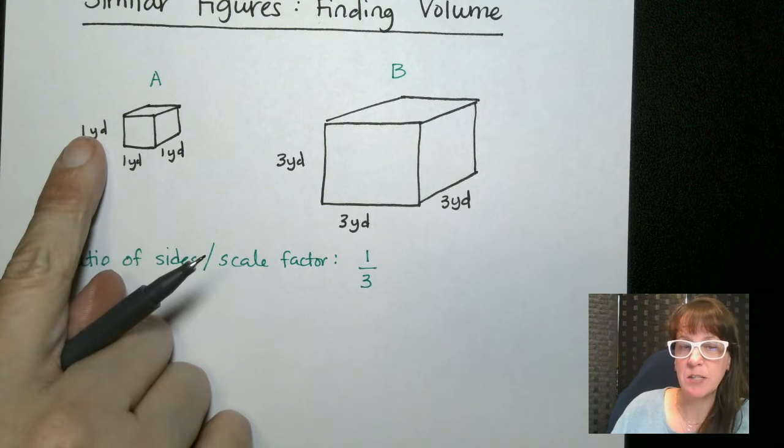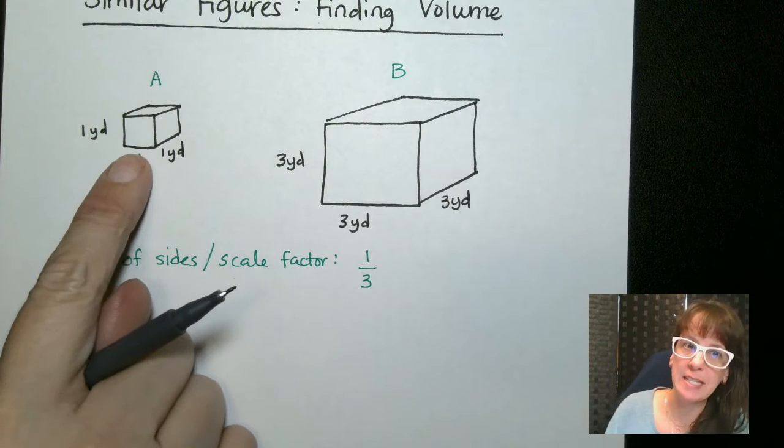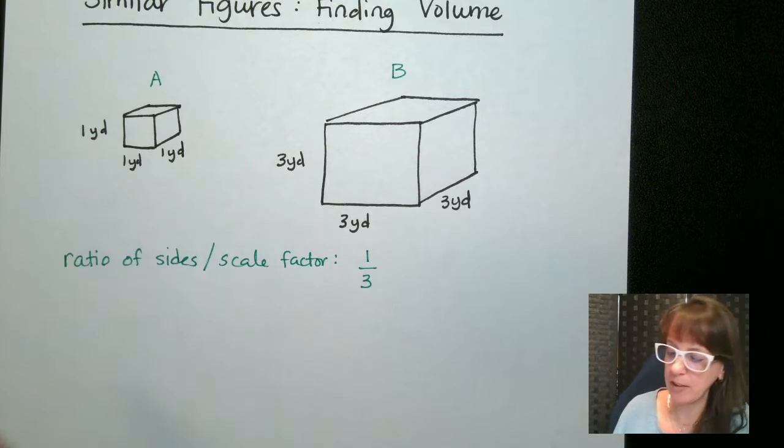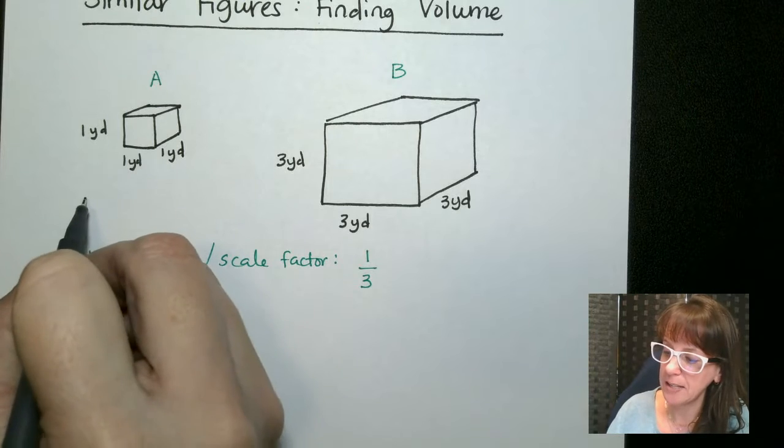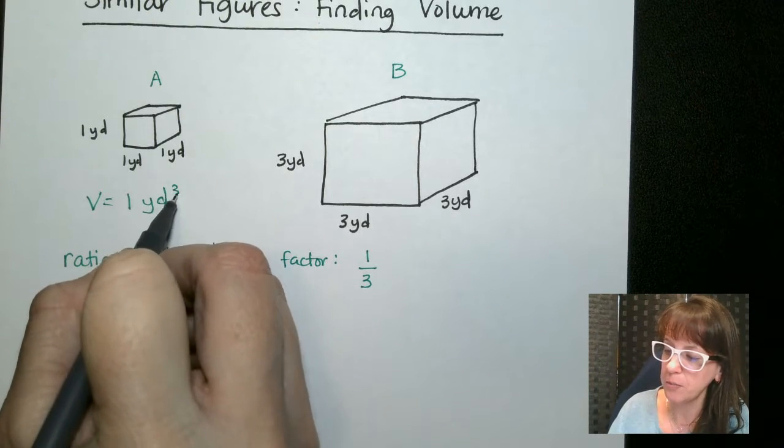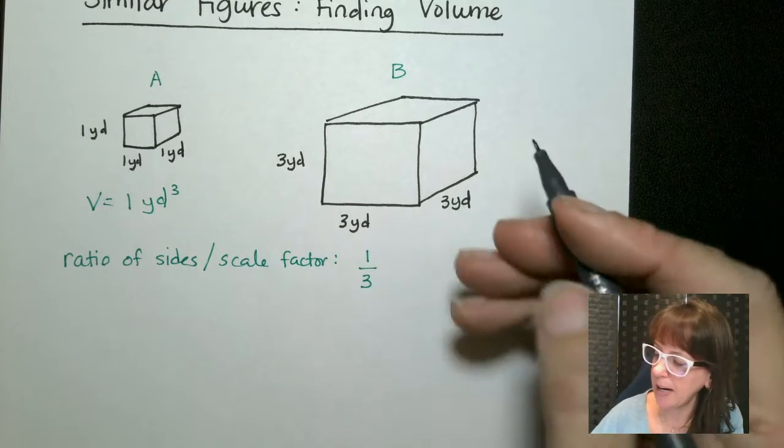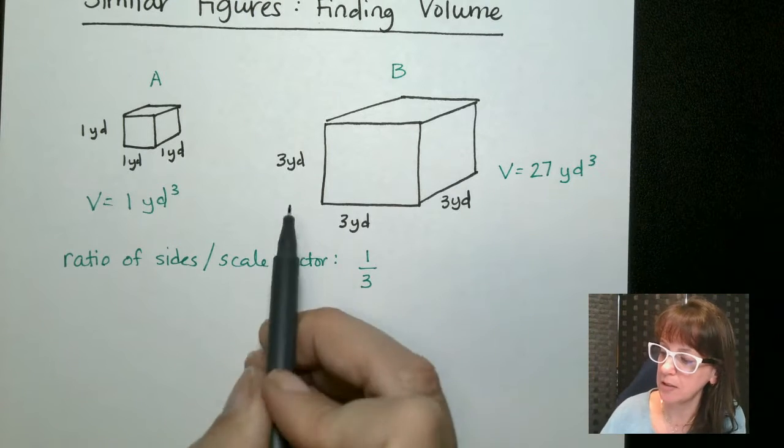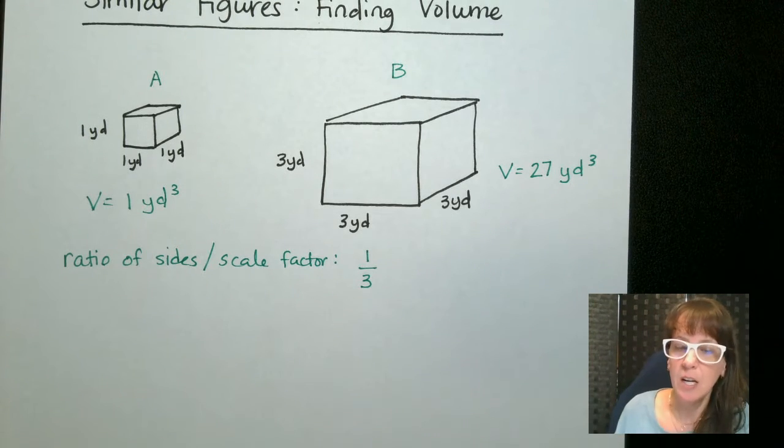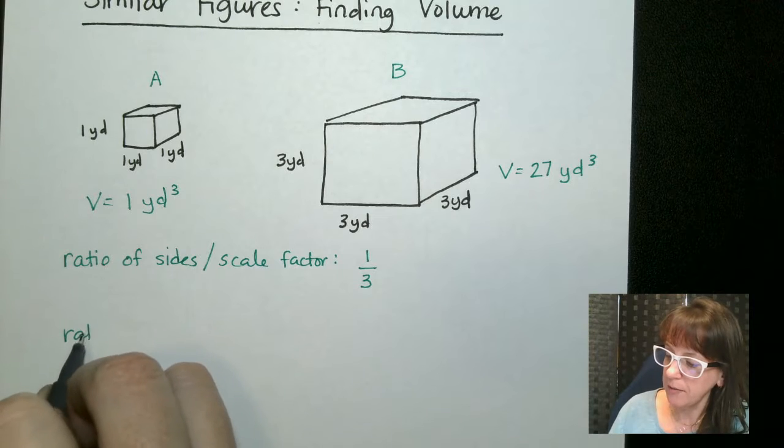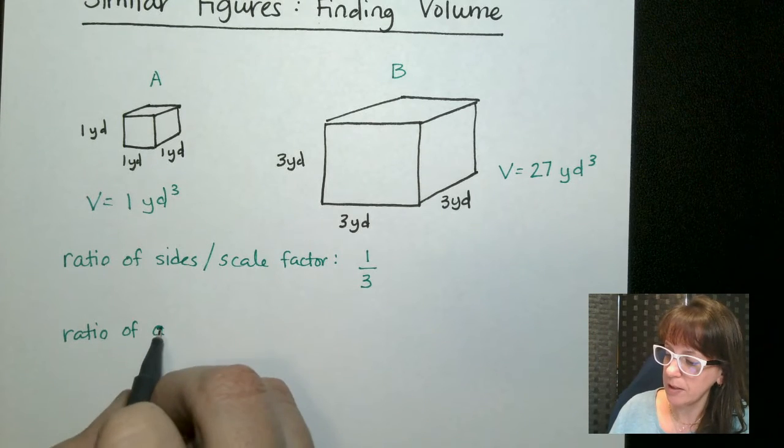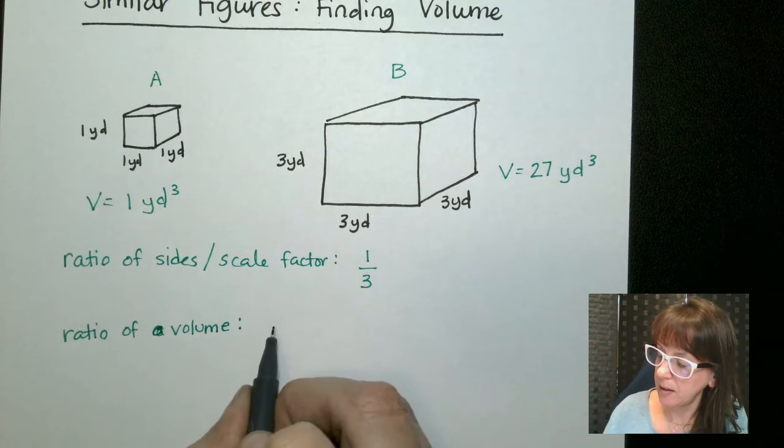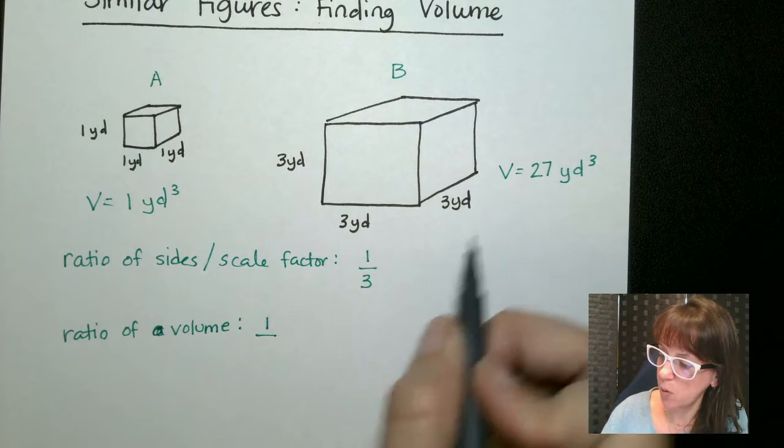Now the volume of this, remember to find the volume of a rectangular prism or a cube is multiplied length times height times width. So if I do that I end up with a volume of 1 yard cubed. Now over here if I do that I end up with 27 yards cubed because 3 times 3 is 9 times 3 is 27. So the ratio of the volume is going to be 1 to 27.